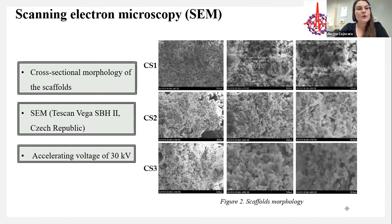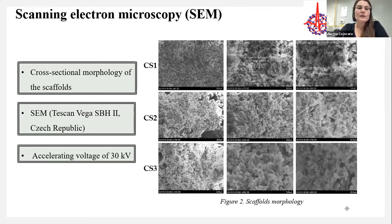Cross-sectional morphology of the scaffolds was studied using scanning electron microscopy. As can be seen in Figure 2, we obtained scaffolds with a three-dimensional architecture — a porous structure with calcium phosphate and magnetite nanoparticles distributed within the polymeric matrix. This porous structure is very important because it influences many properties, such as mechanical properties, in vitro behavior, and so on.